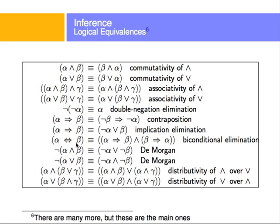The double implication — the biconditional — can be made into two conditionals: alpha implies beta, and beta implies alpha. That's biconditional elimination. Using the rule above, it is possible to get this expression into these two, and each one of these into just an OR and NOTs. So we'll see how it is possible to bring these expressions into just combinations of ORs, ANDs, and NOTs.